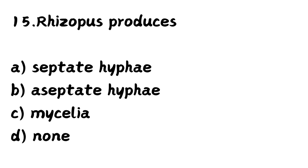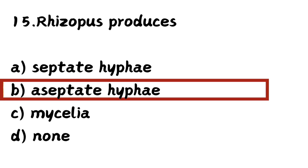The last question: Rhizopus produces — Option A: septate hyphae, Option B: aseptate hyphae, Option C: mycelia, Option D: none. The right answer is Option B — aseptate hyphae. Rhizopus produces aseptate hyphae. Today we are winding up. You can watch the previous videos from the playlist.